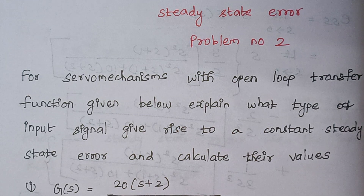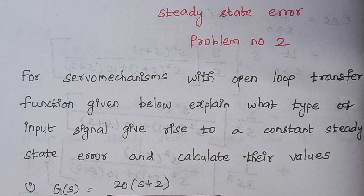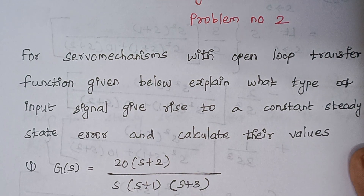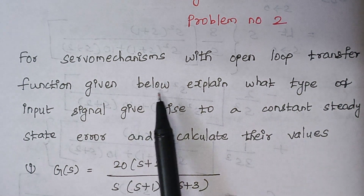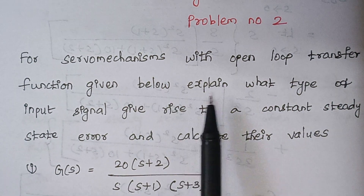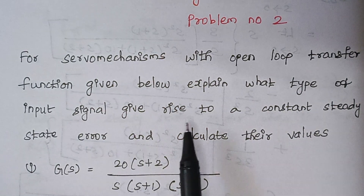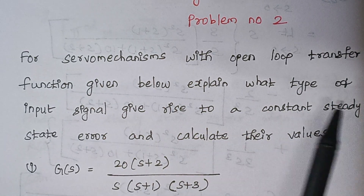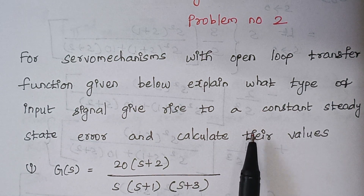Hello viewers, I am Kouselya. Today we are going to solve problem number 2 under the topic steady state error. The problem is: for servo mechanisms with open loop transfer function given below, explain what type of input signal gives rise to a constant steady state error and calculate their values.